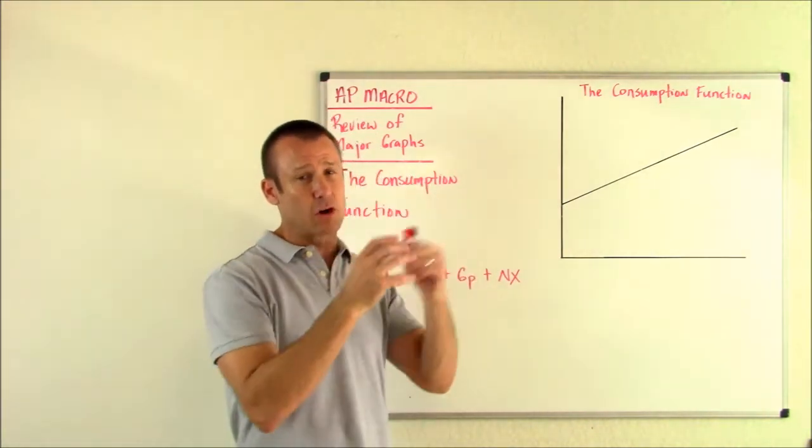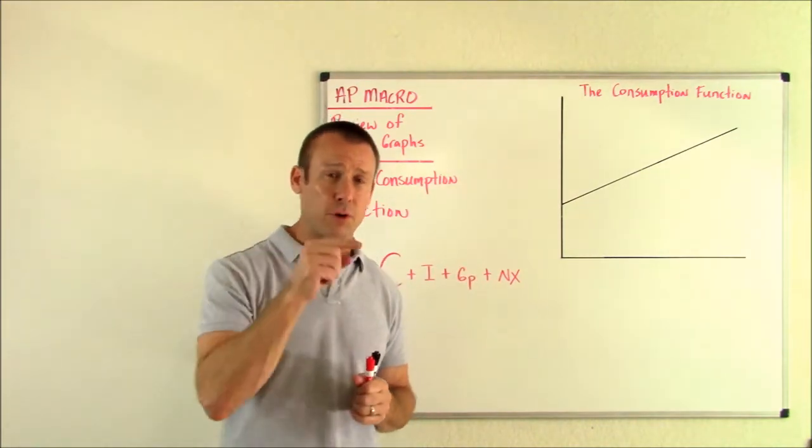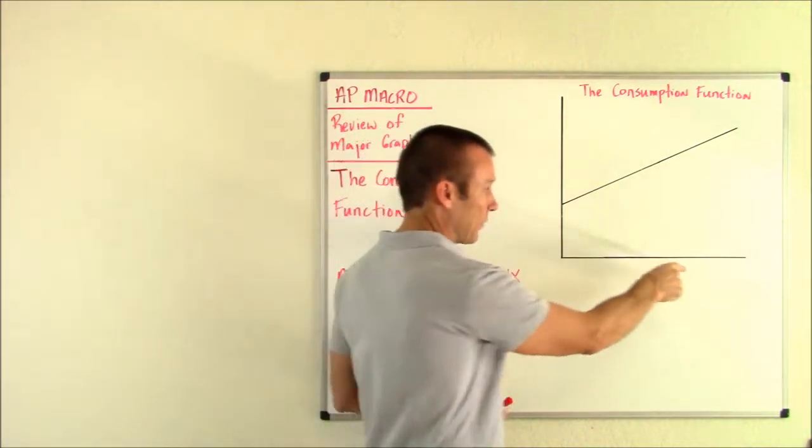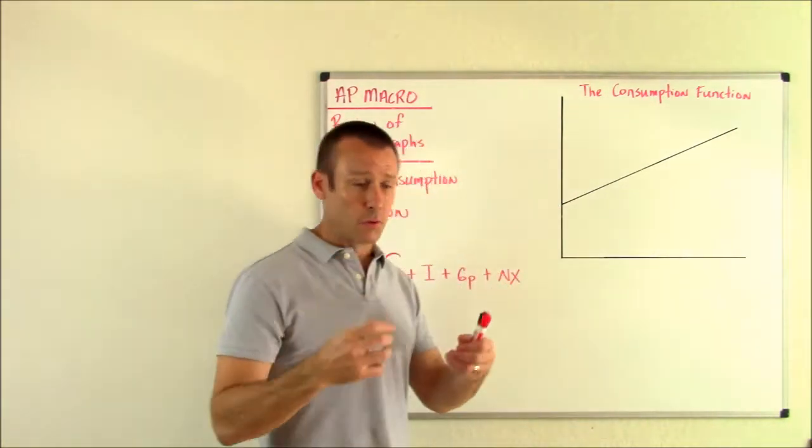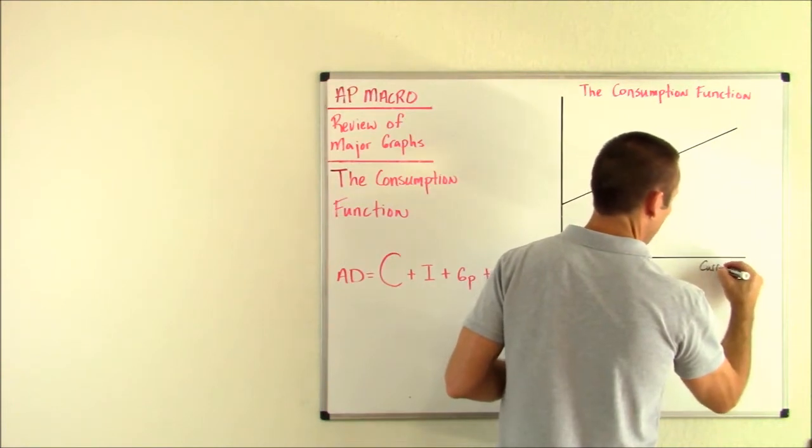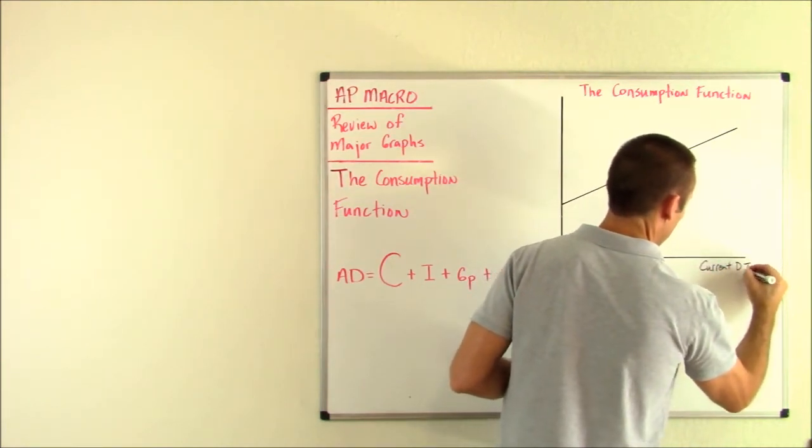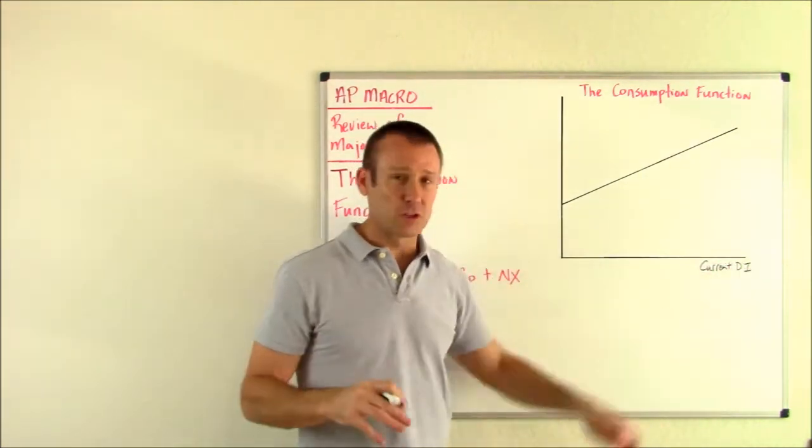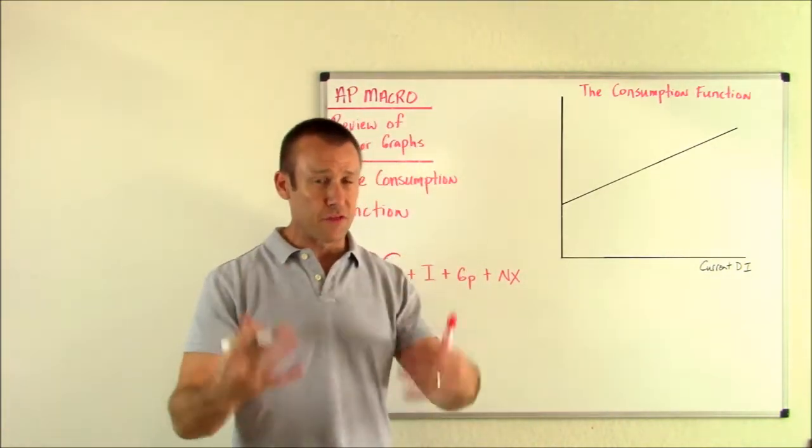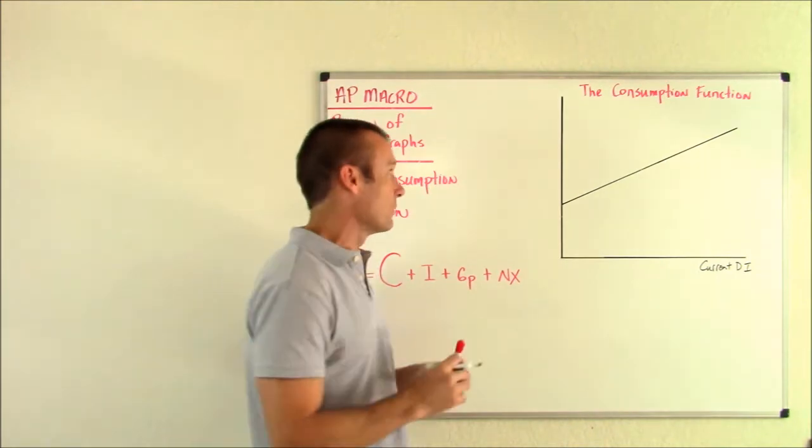And so we take that number one thing that determines our level of consumption and we put it on the graph as the independent variable. So, right here on the horizontal axis, just like in normal math class, we're going to put current disposable income. Why are we putting current disposable income on the graph? Just like I said, it's the number one thing that determines our level of consumption.